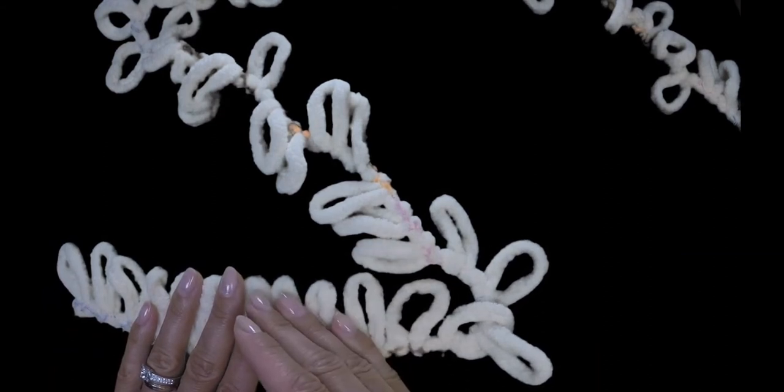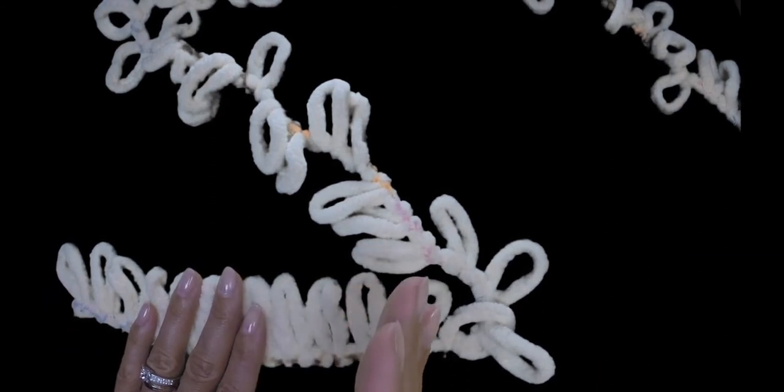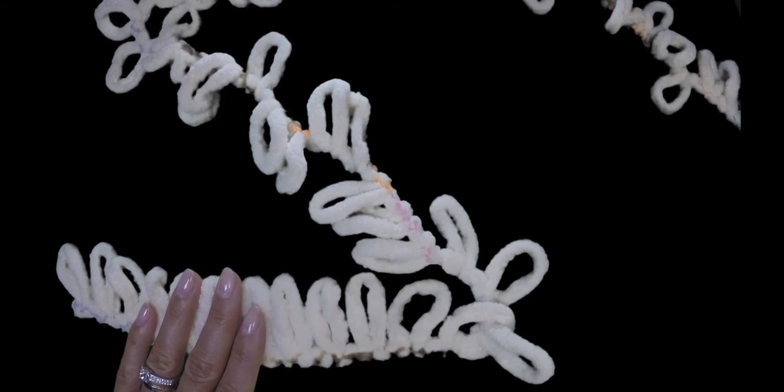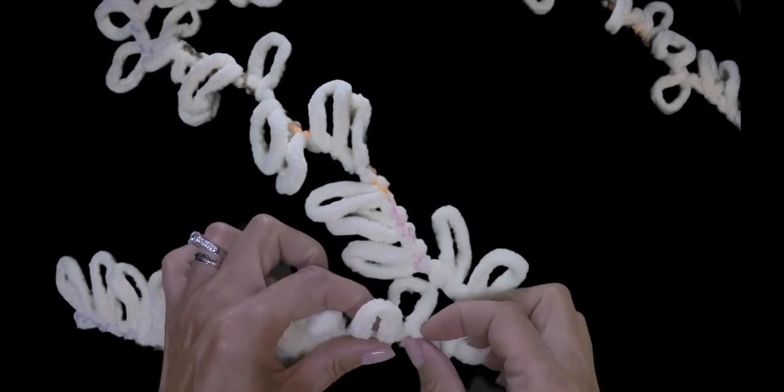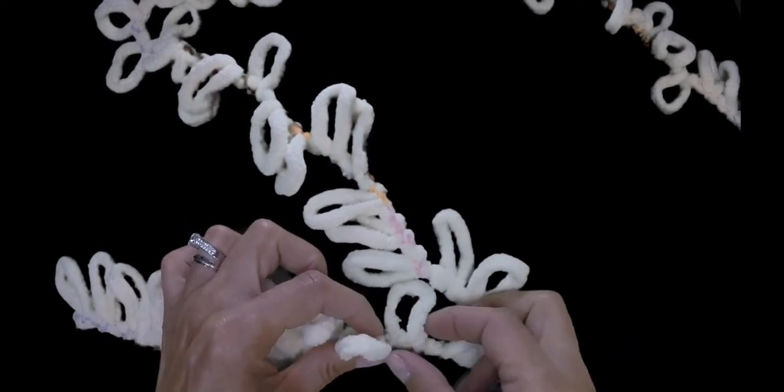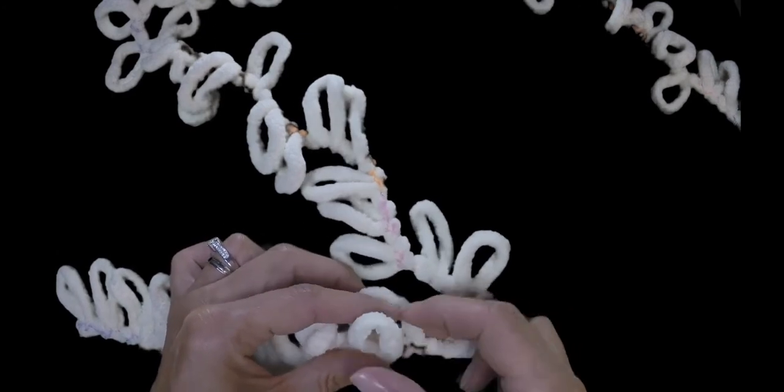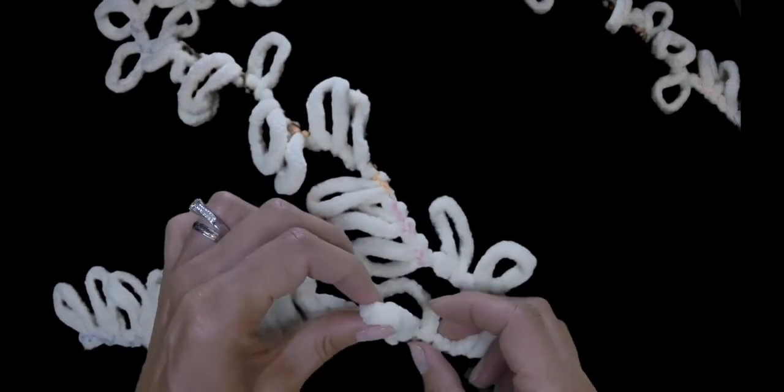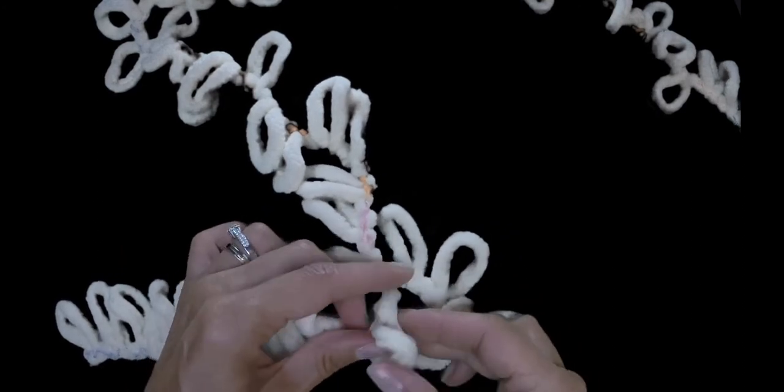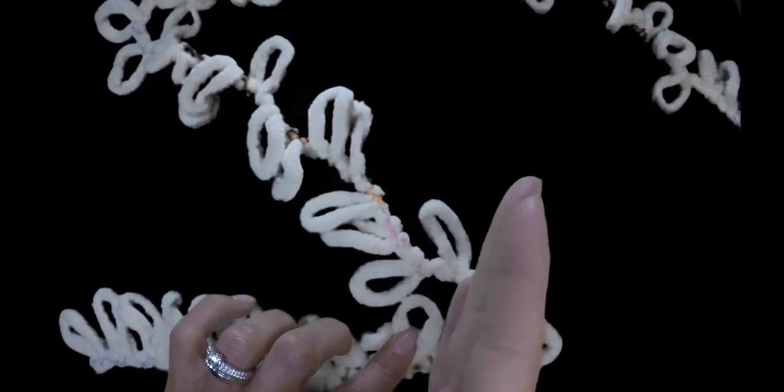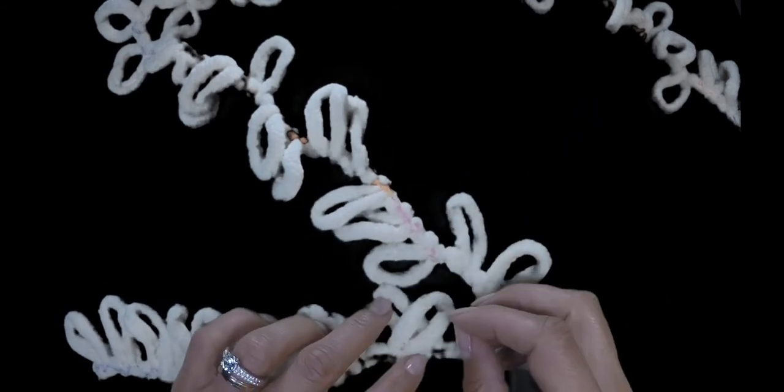The angle of the braid you can decide for yourself. It can be angled left or right. You will put loops together based on your angle. If we're crocheting a braid angled right, then our left loops will go above the right, like this. And then our braid will turn out angled right.